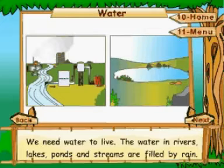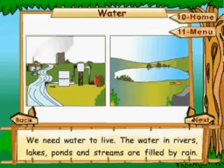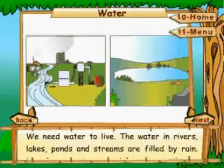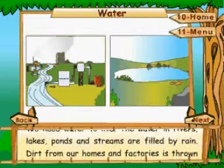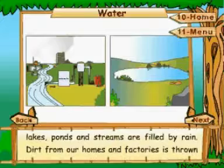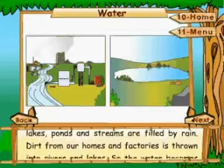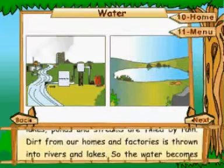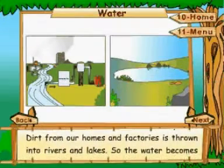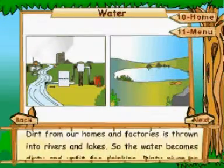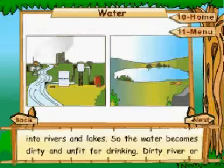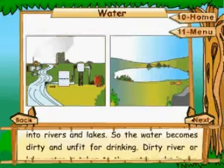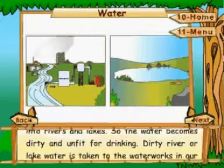The water in rivers, lakes, ponds and streams are filled by rain. Dirt from our homes and factories is thrown into rivers and lakes. So the water becomes dirty and unfit for drinking.